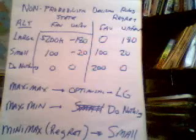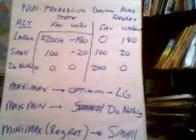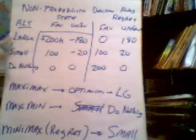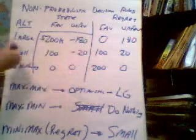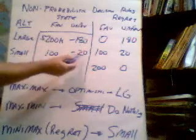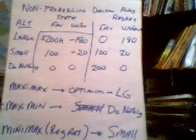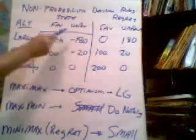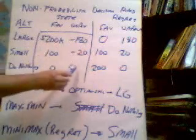The maxi-min rule is similar — this is what a pessimist or conservative decision-maker would do. You select the minimum associated with each alternative in each row: minus $180,000, minus $20,000, and $0. Then you select the alternative associated with the maximum of those minimums. The maximum of those minimums is $0, so you would do nothing.